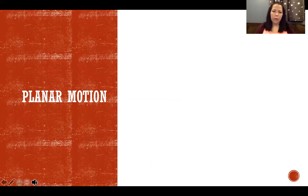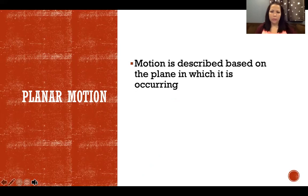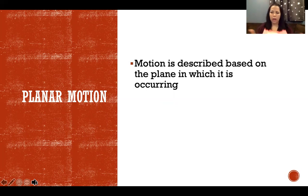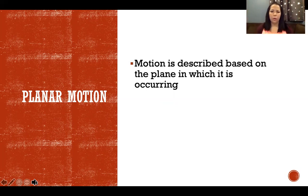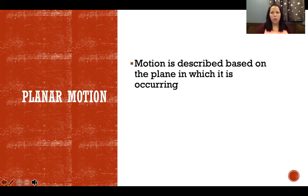We can describe our motion based on what plane we're moving in. If I'm moving completely in the forward direction — like walking, running, or riding a bike — that would be sagittal movement. If I did jumping jacks, I'd be moving in the frontal or coronal plane. Any kind of twisting or rotation is happening in the transverse or horizontal plane.